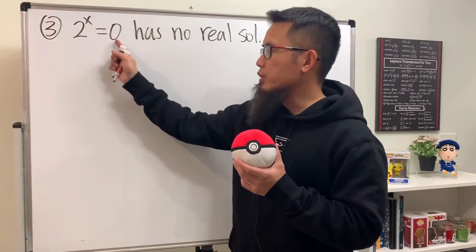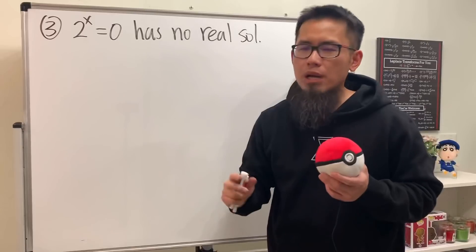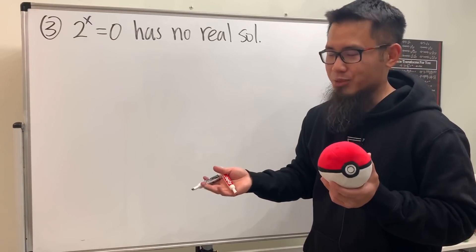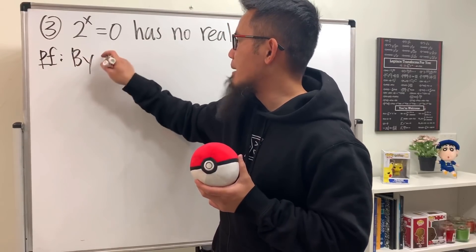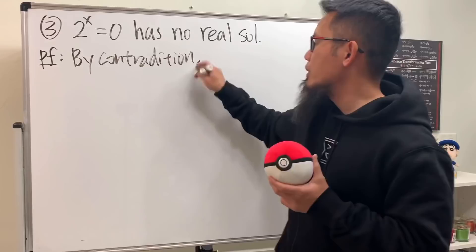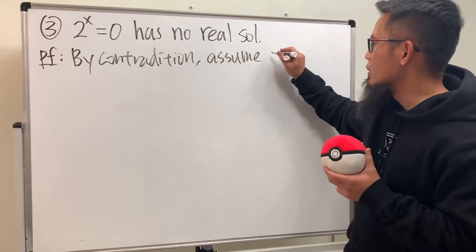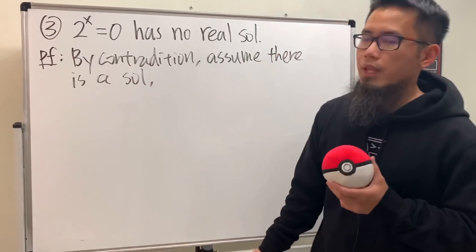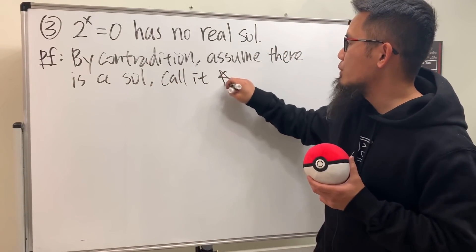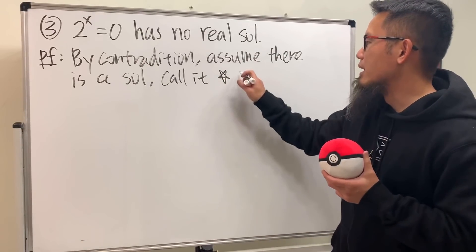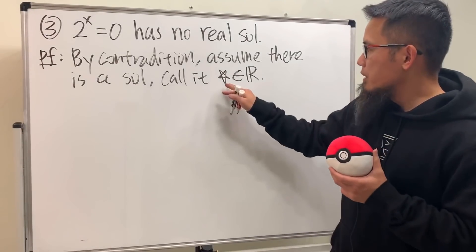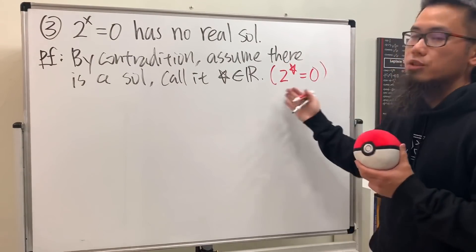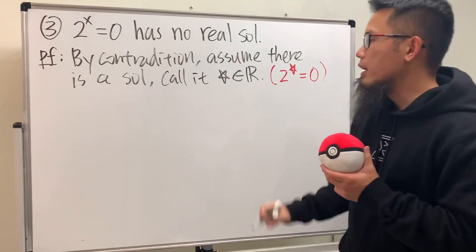For proof three, we show that 2^x = 0 has no real solutions. Because we have the word 'no,' let's try contradiction. Assume there is a solution — call it ★ in ℝ. Because ★ is a solution, we have 2^★ = 0.